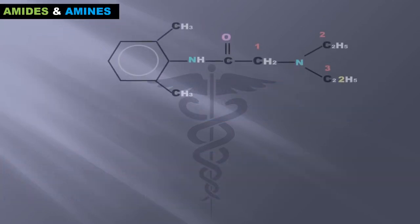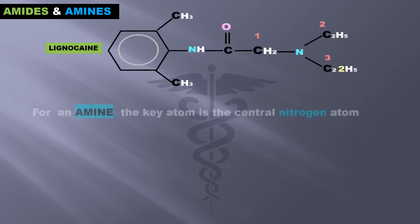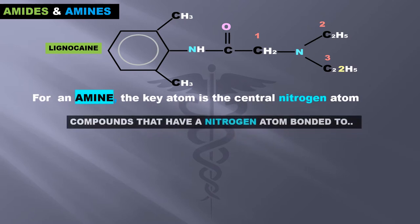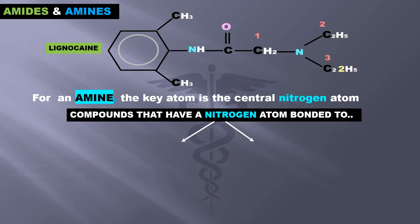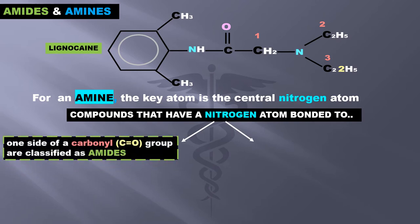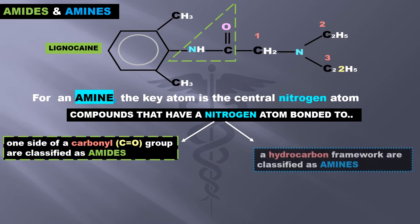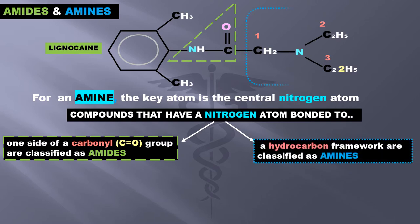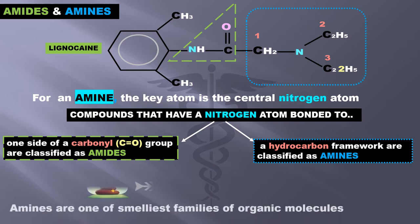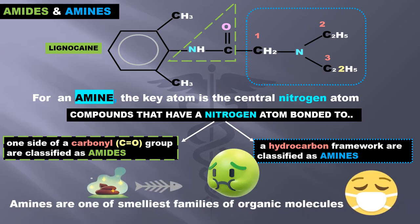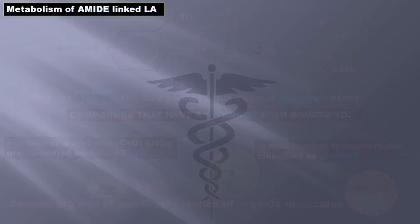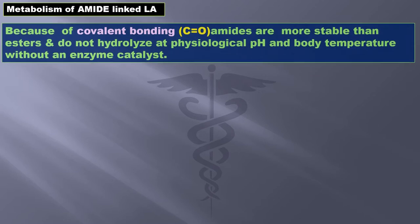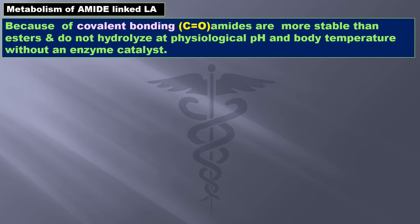Amides and amines: this is the molecular structure of lignocaine. For an amine, the key atom is the central nitrogen atom. Compounds that have a nitrogen atom bonded to one side of the carbonyl group are classified as amides. Those with nitrogen bonded to a hydrocarbon framework are classified as amines. Amines are one of the smelliest families of organic molecules. Because of covalent bonding, amides are more stable than esters and do not break at physiological pH and body temperature without an enzyme catalyst.